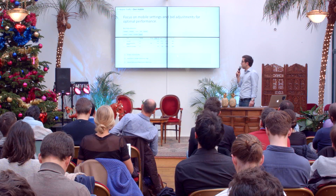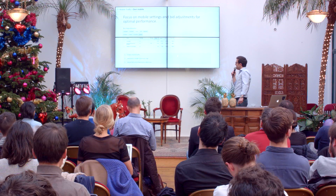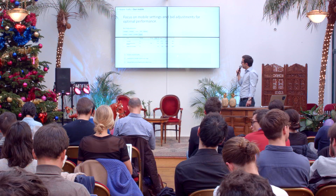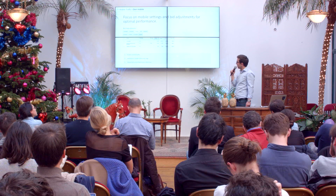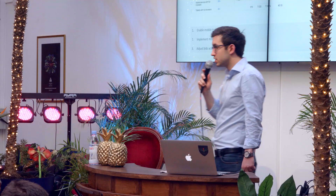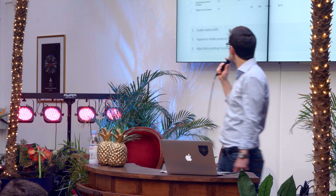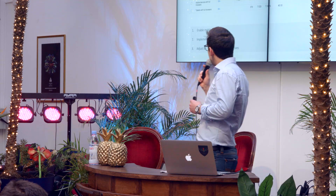First, about bid adjustments for mobile: you cannot set specific mobile bids on search and display campaigns, but you can set mobile bid adjustments. Go to the settings of your campaign and adjust bids in the device section. As you can see in this example, mobile CPCs are a little lower than computer CPCs, CTR is much higher at 7.99%, and there's also a huge inventory of clicks on mobile — almost the same as computer traffic. So you really want to use that traffic.